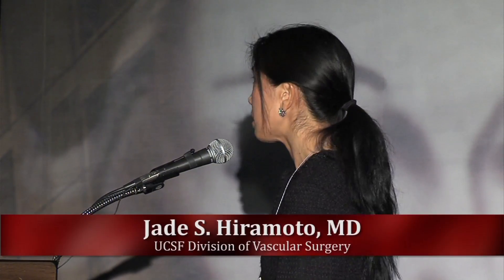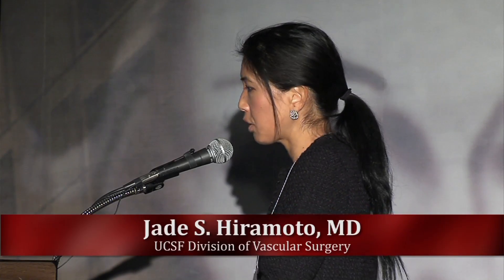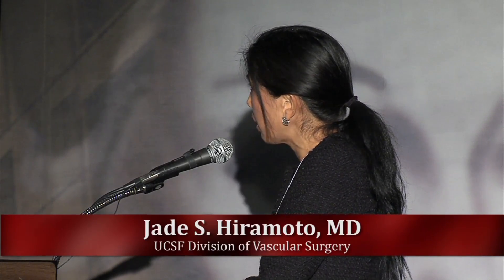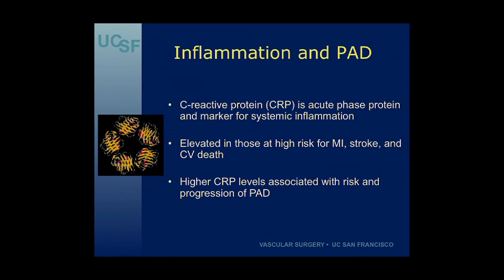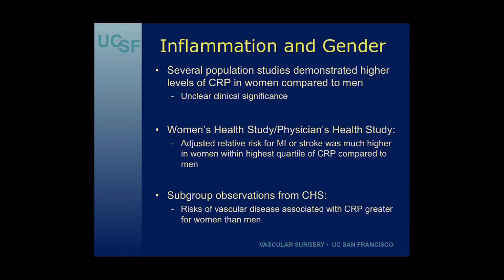So what could these novel risk factors be? I've been interested in inflammation and its role in PAD. C-reactive protein is an acute phase protein shown in the cardiac literature to be a good marker for systemic inflammation and is elevated in those at high risk for MI, stroke, and cardiovascular death. There's also literature supporting that higher CRP levels are associated with the risk and progression of peripheral artery disease. Several population studies have shown higher levels of CRP in women compared to men, though this is of unclear clinical significance.